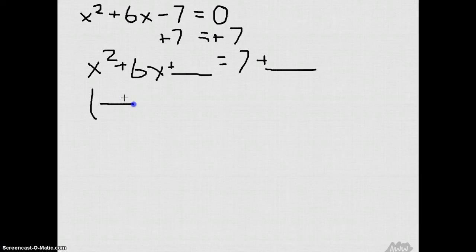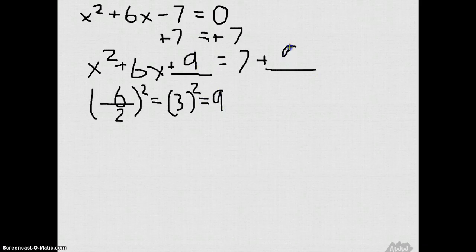So we're gonna use b, which goes right here. b divided by 2 equals 3, and now we're gonna square it. That equals 3 squared, and that's gonna equal 9. So we put 9 and 9. Now we're gonna use the diamond method.